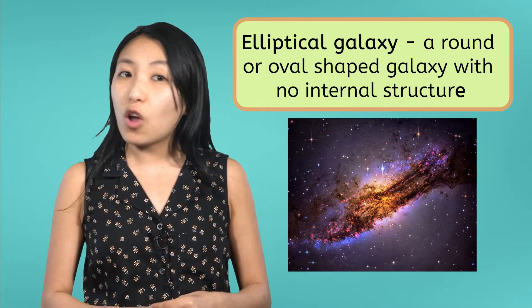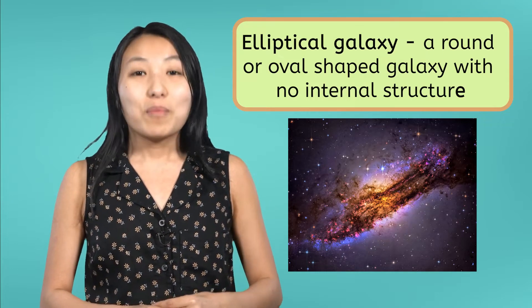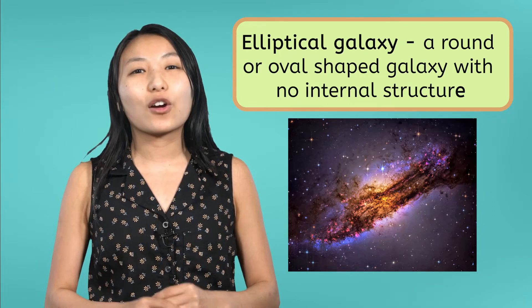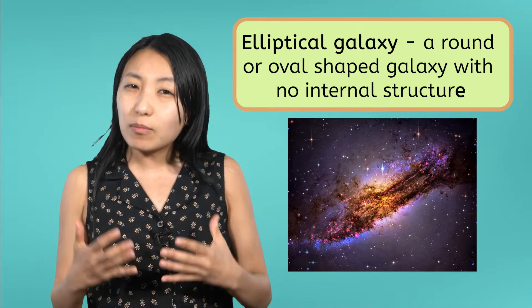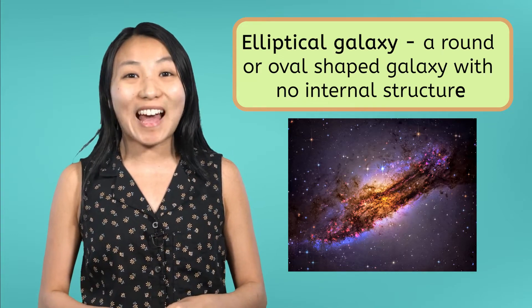Excellent! What observations did you make about elliptical galaxies? If you mentioned their oval shape, uniform brightness, and red color, you nailed it! Elliptical galaxies are classified as round or ovular galaxies with no internal structure. Most stars in elliptical galaxies are old, which is what gives them their reddish color and dim brightness compared to other galaxies.